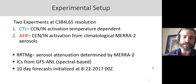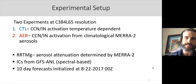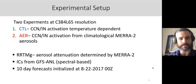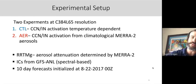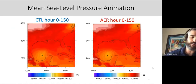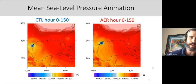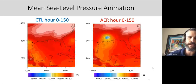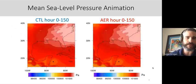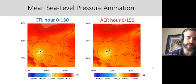I grabbed the initial conditions from the GFS analysis. These were 10-day forecasts initialized four days before Harvey made landfall, around August 22, 2017. Here's an animation of the two cases — overlaid in the black dot is the best track from Harvey, going from hour zero to 150. Controls on the left, aerosols on the right. There's disorganization in the first 50 hours, but they're somewhat similar in structure.